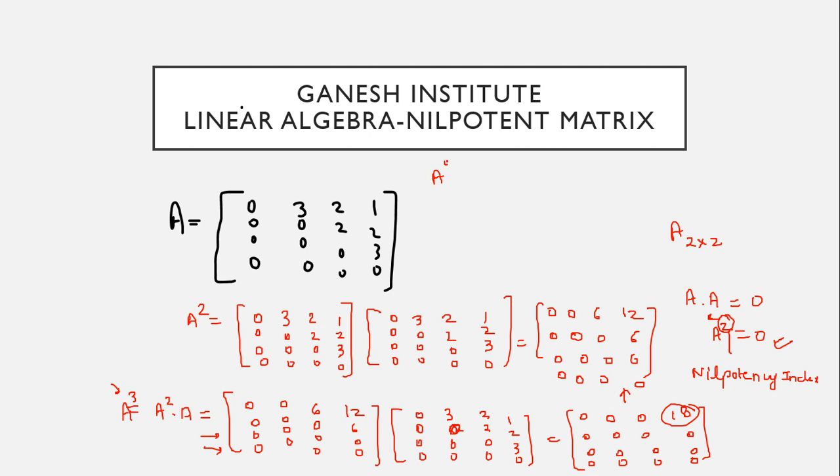Now again find out A raised to power four, that means A cube into A. So all zeros here. What is A cube: 0, 0, 0, 18; all other rows zero. And this is A: 0, 3, 0, 0; 0, 0, 2, 2; 0, 0, 1, 2; and last row 3, 0. Now see these elements will give you zero only in the multiplication. First row with first column zero, first row second column zero, first row third column zero, first row fourth column zero. Rest all zero.